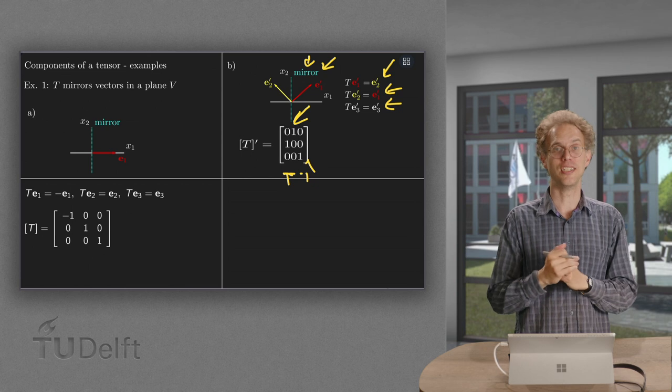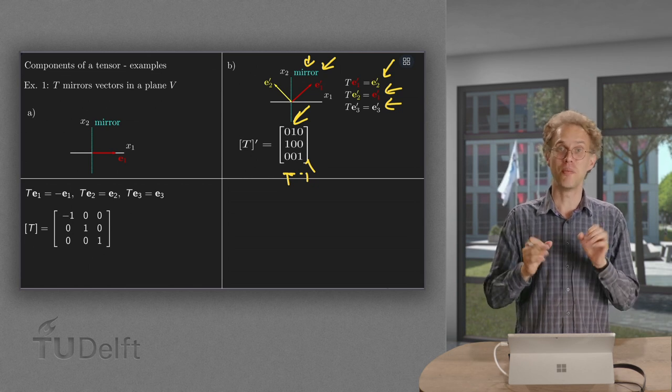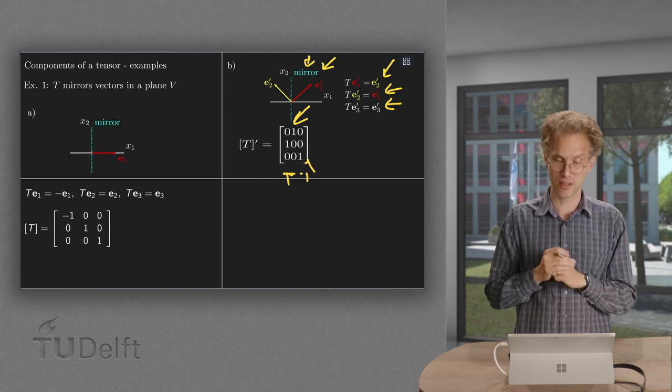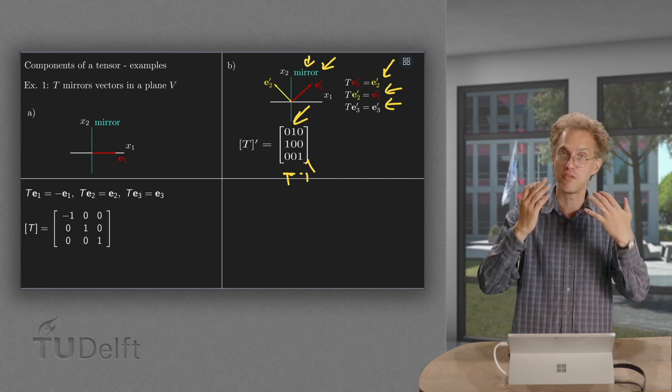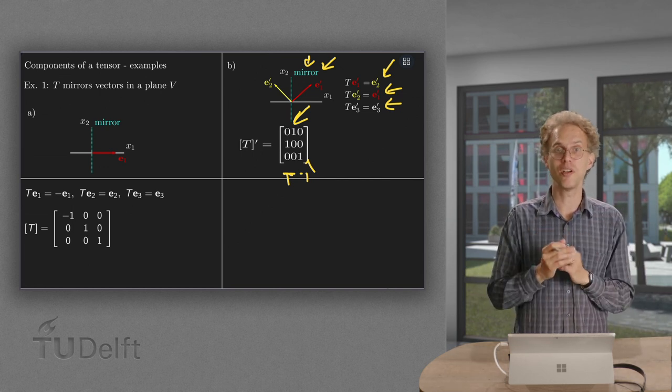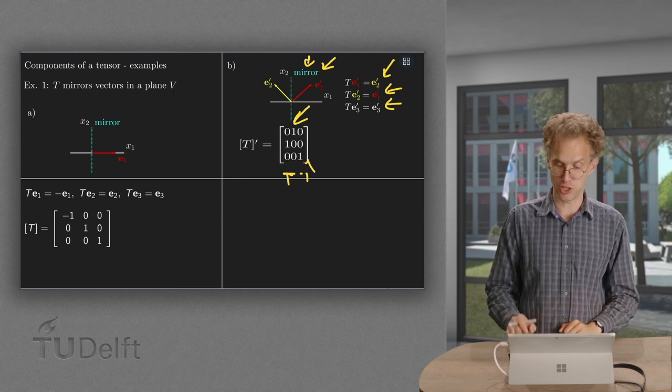So from these two examples, a and b, the tensor is the same, so the mapping is the same. However, the representation, the matrix, is different because we use different basis vectors. So if you want to find the matrix of a tensor, you always have to specify the basis you are using.